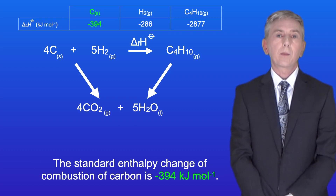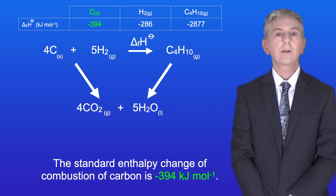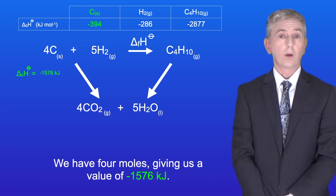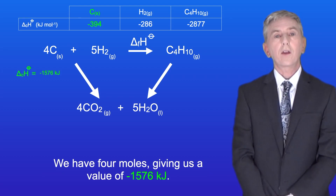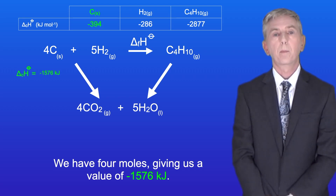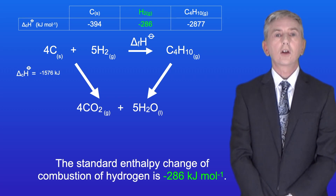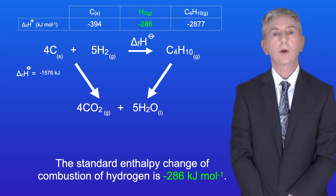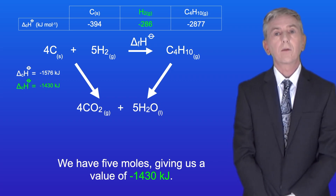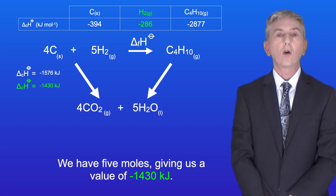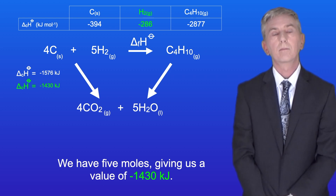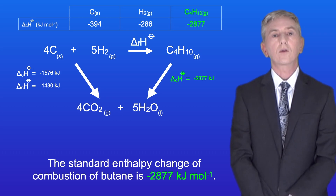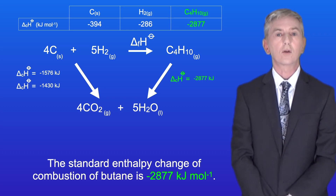The standard enthalpy change of combustion of carbon is minus 394 kilojoules per mole. We've got four moles giving us a value of minus 1576 kilojoules. The standard enthalpy change of combustion of hydrogen is minus 286 kilojoules per mole. We've got five moles giving us a value of minus 1430 kilojoules. And lastly the standard enthalpy change of combustion of butane is minus 2877 kilojoules per mole.